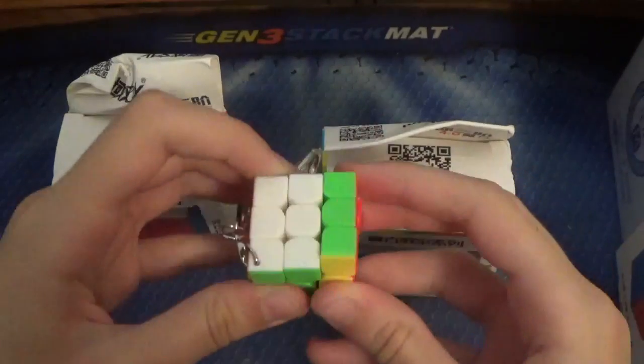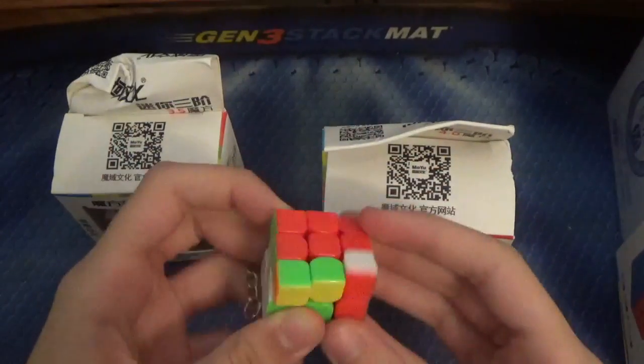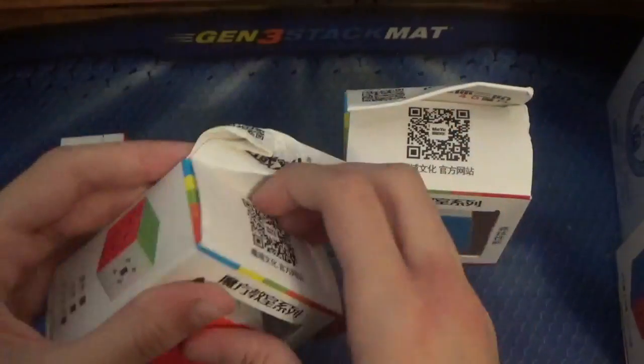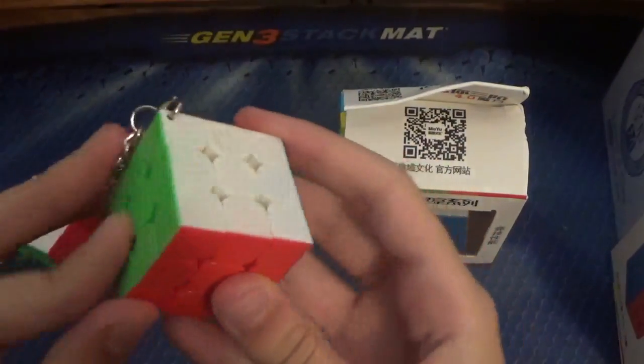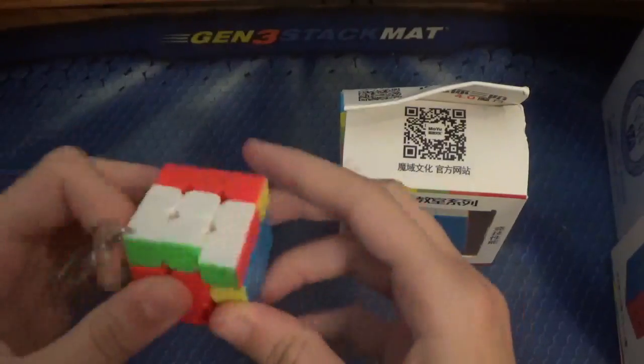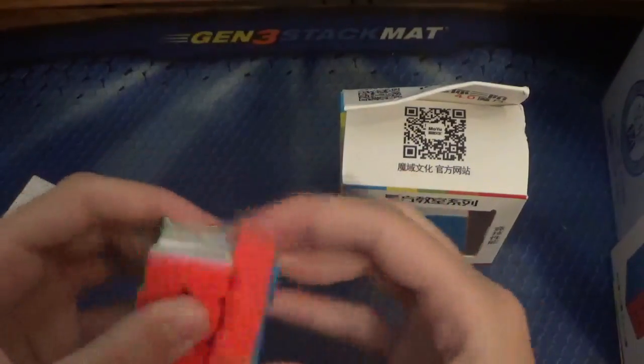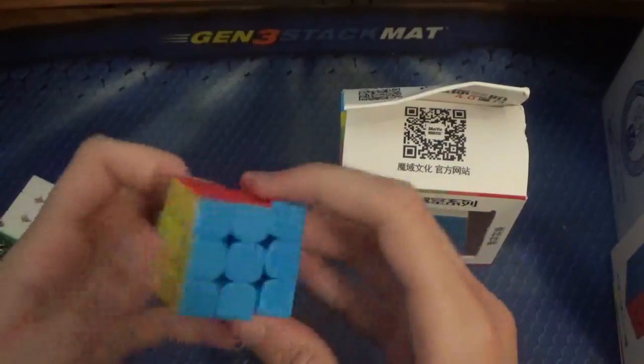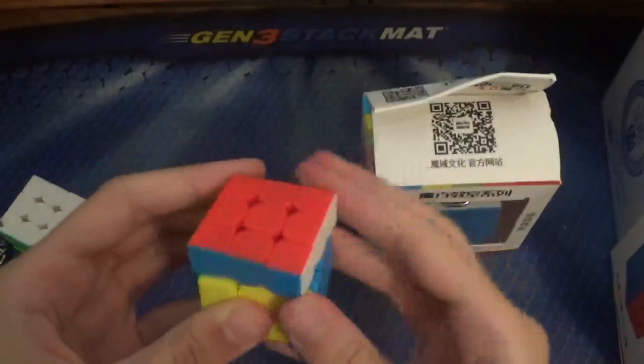This actually might be one of the smallest keychain cubes. I'm not really sure, but for the size, it definitely turns nicely. Let's look at the 3.5. Okay, so it looks very similar. The keychain thing kind of gets in the way. Yep, turns nicely as well.